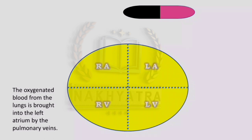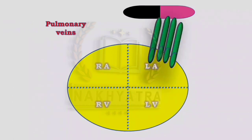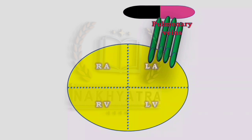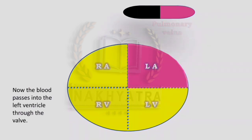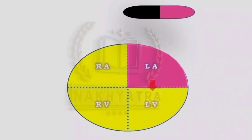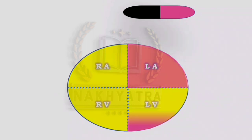The oxygenated blood from the lungs is brought into the left atrium by the pulmonary veins. The pulmonary veins carry the oxygenated blood from the lungs to the left atrium. Then from the left atrium, the oxygenated blood passes into the left ventricle through the valve.